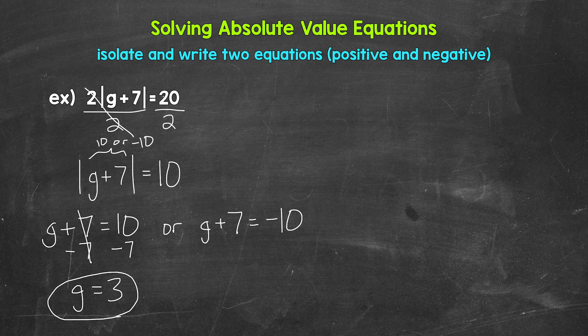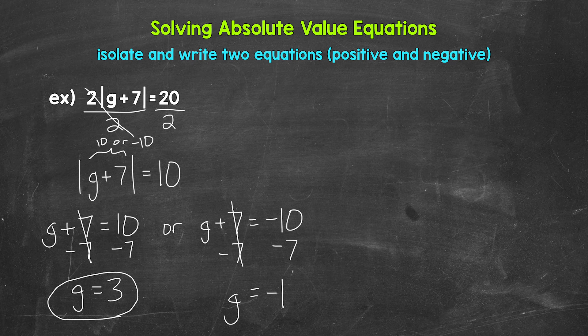Now let's solve g plus 7 equals negative 10. Subtract 7 from the left side and the right side. These 7s cancel each other out, so g is now isolated. Negative 10 minus 7 gives us negative 17. So g equals negative 17. Those are our two solutions.